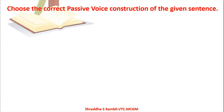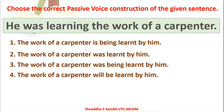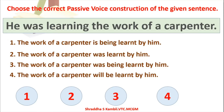Next question: 'Choose the correct passive voice construction of the given sentence.' The sentence is 'He was learning the work of a carpenter' — this is in the past tense. The options are: (1) The work of a carpenter is being learnt by him, (2) The work of a carpenter was learnt by him, (3) The work of a carpenter was being learnt by him, (4) The work of a carpenter will be learnt by him. The correct answer is answer number 3: 'The work of a carpenter was being learnt by him.'